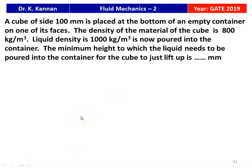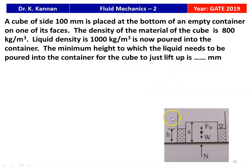The next question from the 2019 question paper: a cube of side 100 mm is placed at the bottom of an empty container. The density of the cube material is 800 kg/m³. Liquid of density 1000 kg/m³ is now poured into the container. What is the minimum height to which the liquid needs to be poured for the cube to just lift up? The cube has an upward buoyant force F_b, a downward weight w, and a normal reaction N.